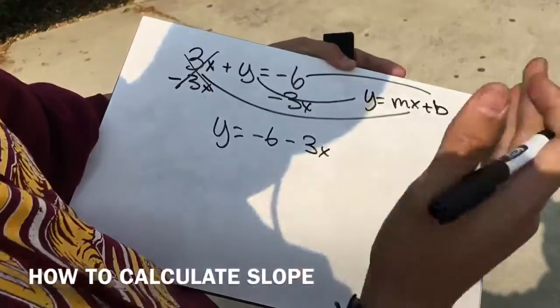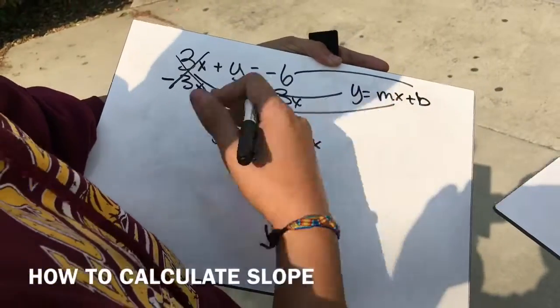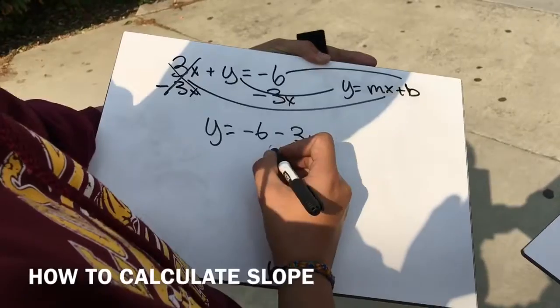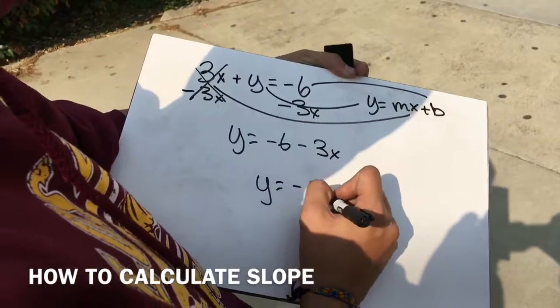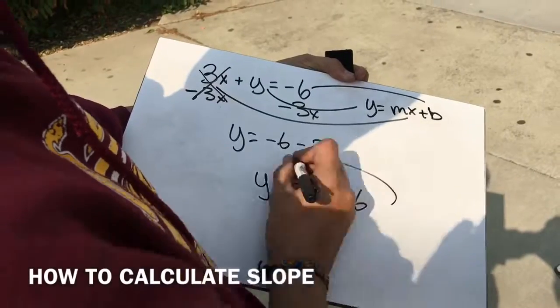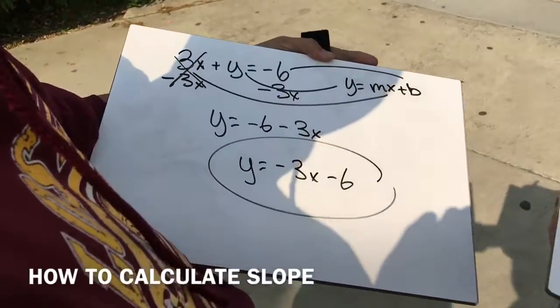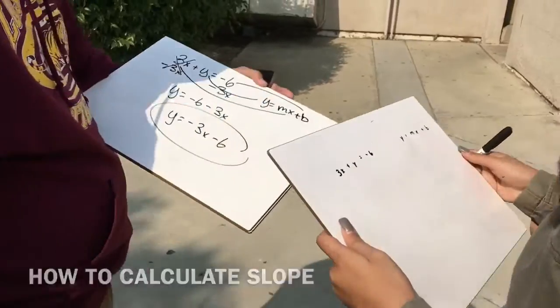Now you might be saying to yourself, this isn't in that form. It's pretty close. So all we're going to do is just switch it, and we have y is equal to negative 3x minus 6. And now we have our answer. You got it? Yes, I got it. Thank you. You're welcome.